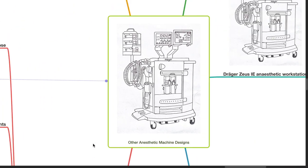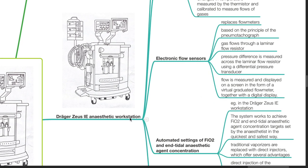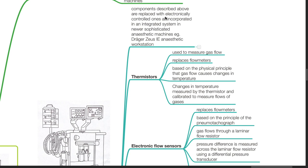Other anesthetic machine designs. MRI non-compatible anesthetic machines have ferromagnetic materials and should not be used close to an MRI scanner, as distorted readings and physical damage to the scanner are possible. Anesthetic machines made totally of non-ferrous material may be used near MRI machines. The Drager Zeus IE Anesthetic Workstation: components described previously are replaced with electronically controlled ones, all incorporated in an integrated system in this newer sophisticated anesthetic machine.